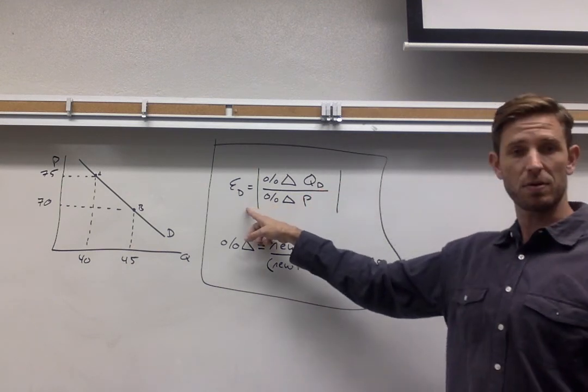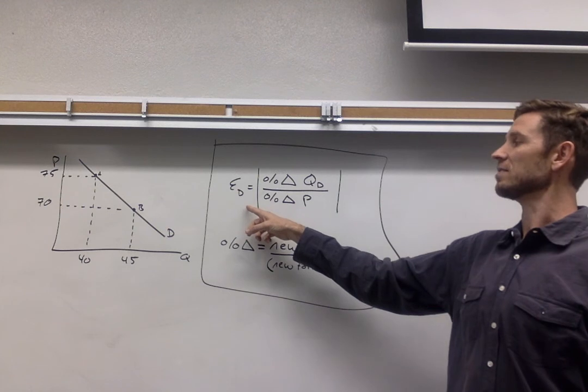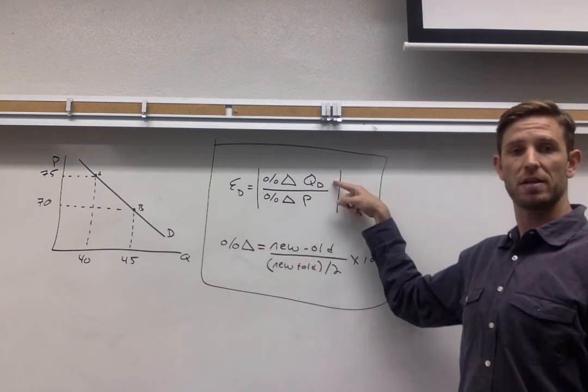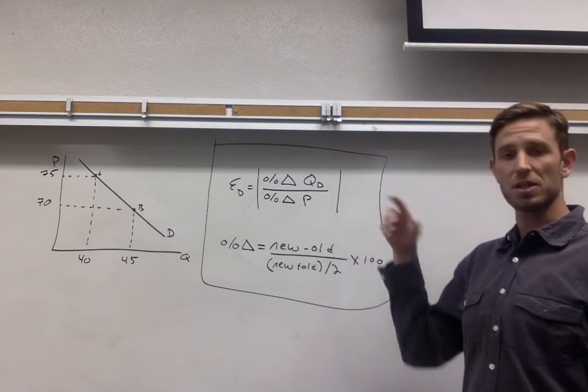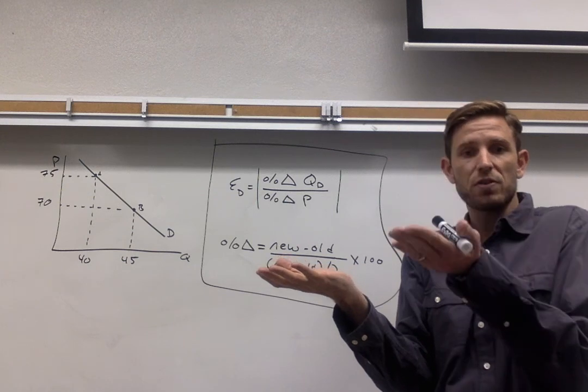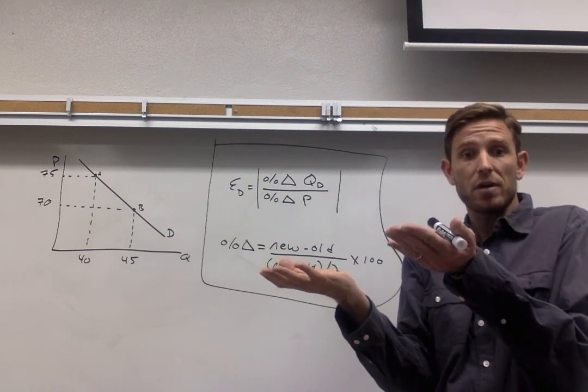And here we have it, the typical form. Price elasticity of demand is going to be the absolute value of the percentage change in quantity demanded divided by the percentage change in the price. So for a given price change, we want to know just how much more, how much fewer of the given product that people end up buying.